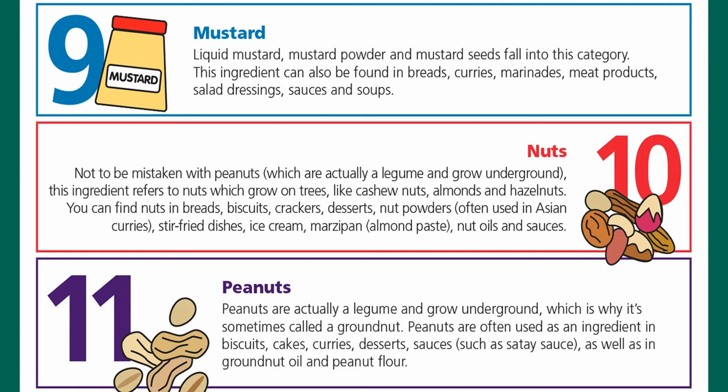Number ten is nuts — not to be mistaken with peanuts, which are a legume and grow in the ground. This refers to nuts that grow on trees, like cashew nuts, almonds, and hazelnuts. You can find nuts in breads, biscuits, crackers, desserts, nut powders often used in Asian curries, stir-fried dishes, ice cream, marzipan such as almond paste, and nut oils.